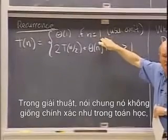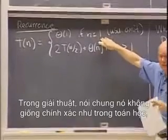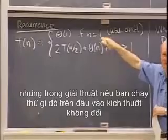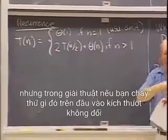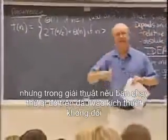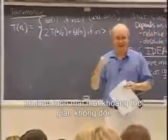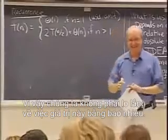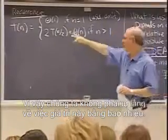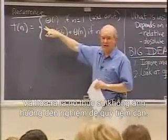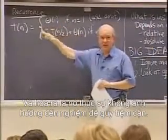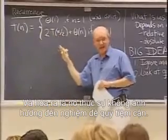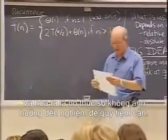Because in algorithms — it is not true generally in mathematics, but in algorithms — if you are running something on a constant size input, it takes constant time, always. We do not worry about what this value is, and it turns out it has no real impact on the asymptotic solution of the recurrence.